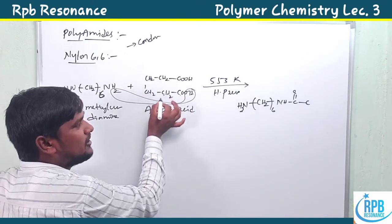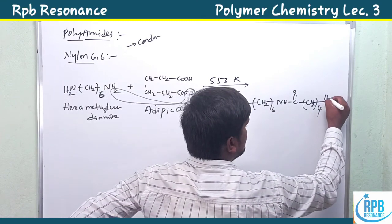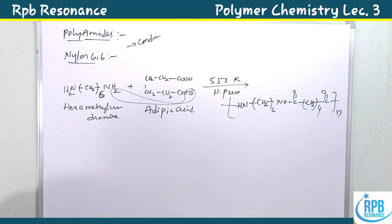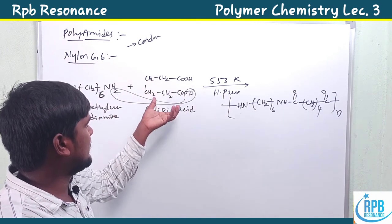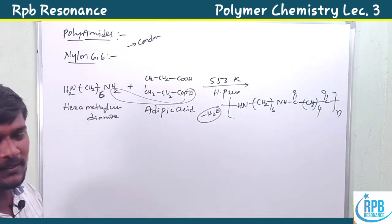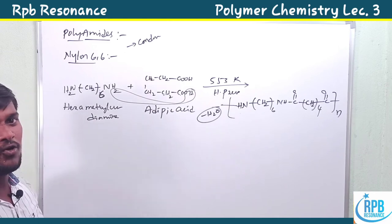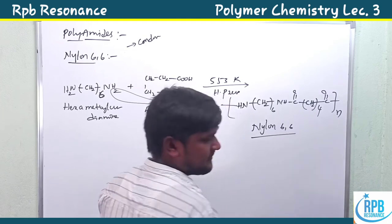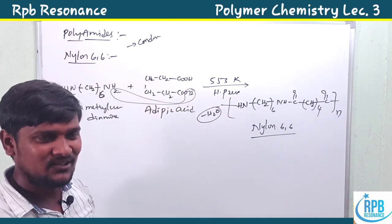In the polymer, one hydrogen from hexamethylene diamine and one –OH from adipic acid are eliminated as water, forming an amide bond (–NH–C=O–). The repeating unit contains –(CH₂)₆–NH–C(=O)–(CH₂)₄–C(=O)–. It eliminates water as a small moiety in a stepwise manner — so it is a step-growth polymer as well as a condensation polymer. Since two different monomeric units are used, it is also called a copolymer. This polymer is simply called Nylon 6,6.